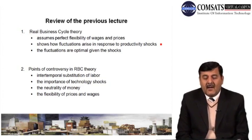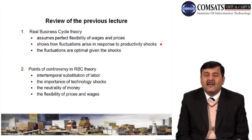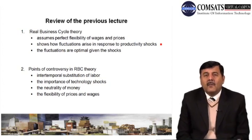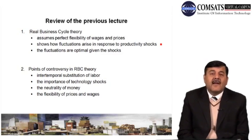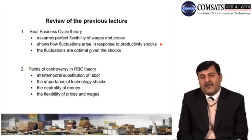Points of controversy in the Real Business Cycle theory include intertemporal substitution of labour — labour can be substituted, and labour supply adjusts to cover the output gap or productivity shocks. Technology is also seen as a cause of economic fluctuations; whenever there are technology shocks, there will be economic fluctuations.